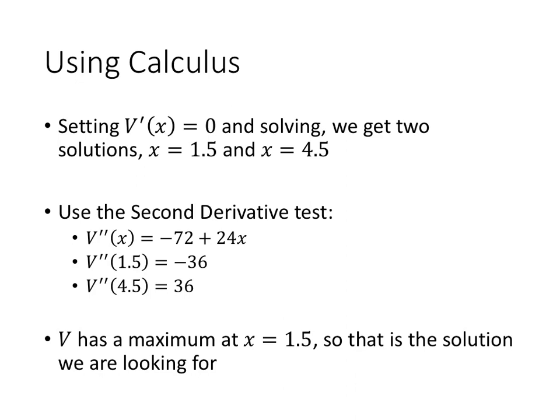Setting the derivative equal to 0 gives us two critical values, 1.5 and 4.5. We can use the second derivative test to test those critical values, and we see that V has a maximum at x equals 1.5, because the second derivative is negative there, and that means that's the solution we're looking for.